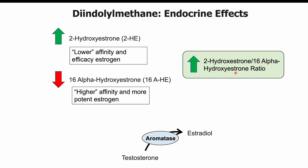Another effect DIM has is on the aromatase enzyme, which is the enzyme that converts testosterone to estradiol. Diindolylmethane acts to inhibit aromatase enzyme. So it leads to higher levels of a lower-efficacy estrogen, lower levels of a more potent estrogen, and also changes in estradiol formation in general. These endocrinological effects are important in resolving certain signs and symptoms and reducing the risk of particular conditions.